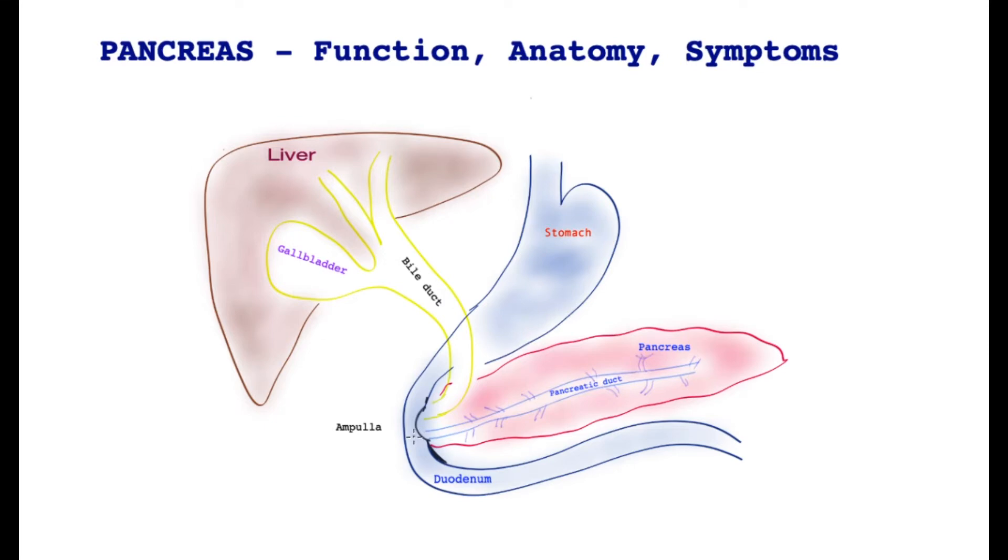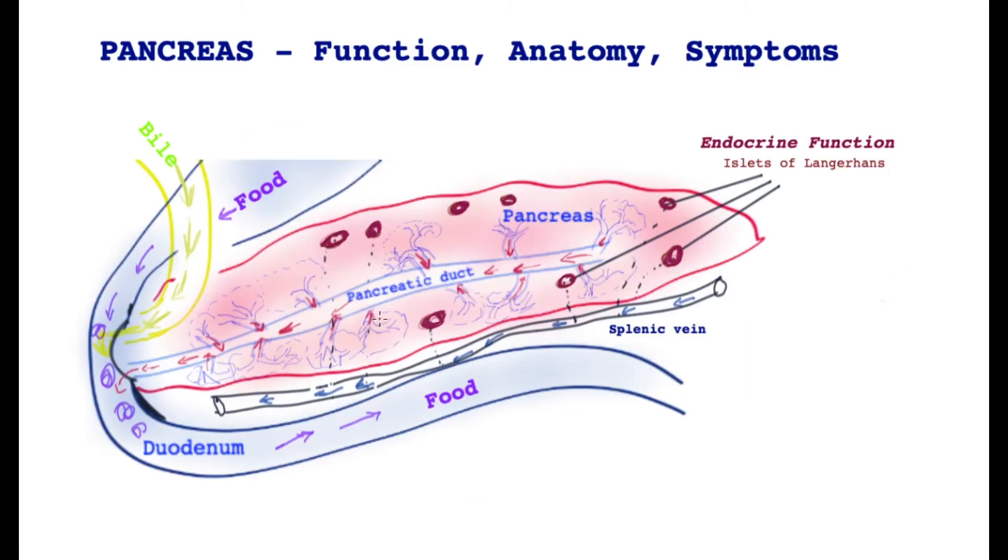It has other functions, the endocrine function as well, and we will talk about that in a little bit. This diagram shows the exocrine function of the pancreas, i.e. production of the enzyme and how it is organized, as well as the endocrine function.